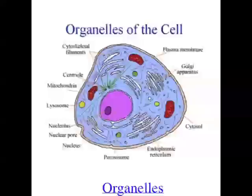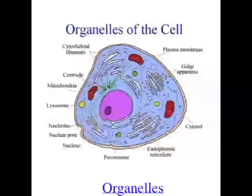Another organelle found in plant cells is a chloroplast. Chloroplasts are green because they contain a pigment called chlorophyll, and photosynthesis takes place in chloroplasts. Another organelle is a ribosome — these are tiny organelles you can't see with a light microscope, and they're the sites of protein synthesis. Another organelle is the endoplasmic reticulum, which can be smooth or rough. Rough endoplasmic reticulum has ribosomes on it, while smooth endoplasmic reticulum doesn't. The endoplasmic reticulum is involved in protein synthesis and the production, processing, and transport of materials like proteins within the cell.